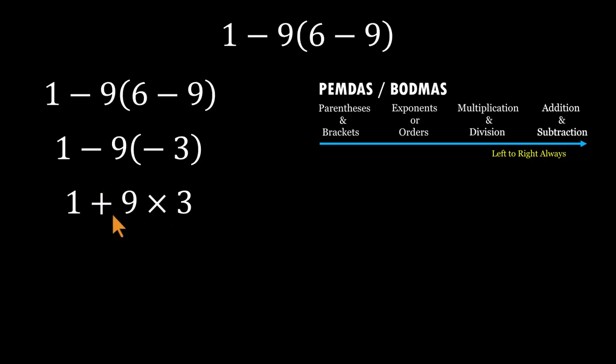But don't rush the plus sign. Even though addition shows up first when you read it, the order of operations tells us multiplication comes before addition. So we handle nine times three first, which equals 27. Now finish it off with addition. One plus 27 equals 28.